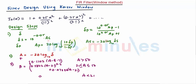The fourth step is to calculate the value of N. There is a relation: N equals (A minus 8) divided by (2.285 delta omega). Delta omega is the transition width which is given by omega S minus omega P.